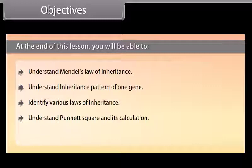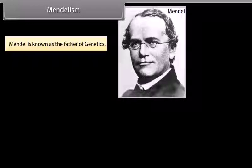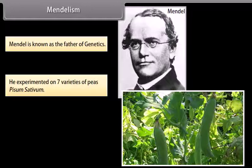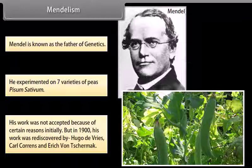Mendel is known as the father of genetics. He experimented on seven varieties of peas, Pisum sativum. His work was not accepted because of certain reasons initially, but in 1900 his work was rediscovered by Hugo de Vries, Karl Correns, and Erich von Tschermak.